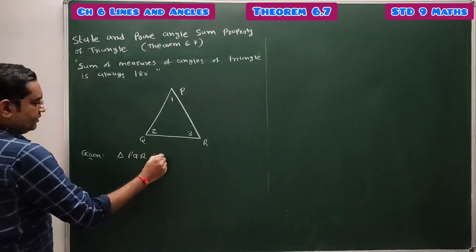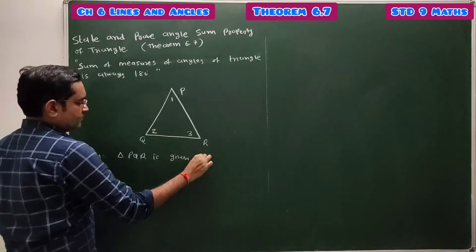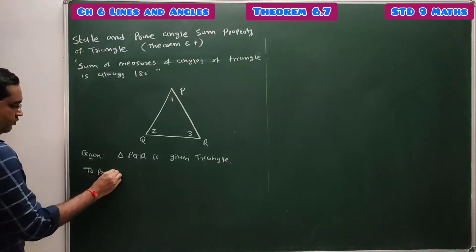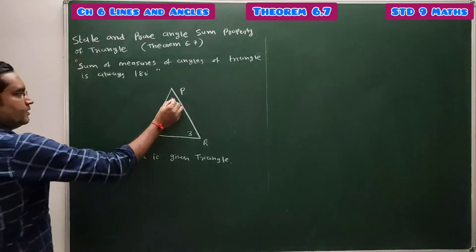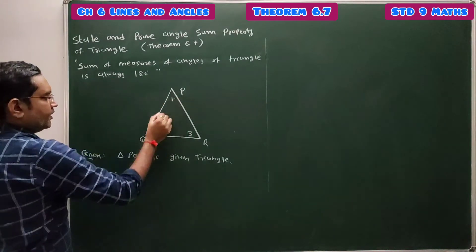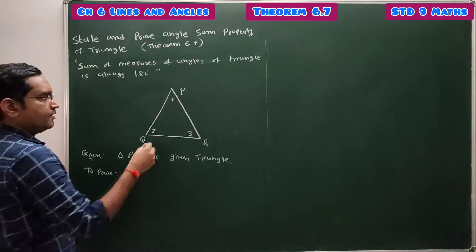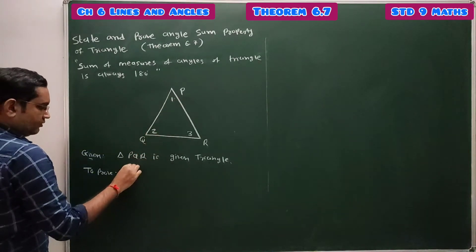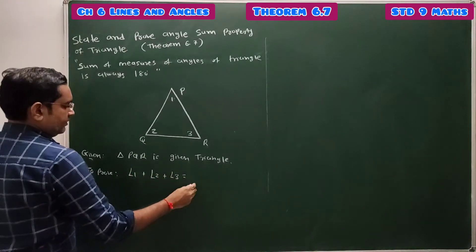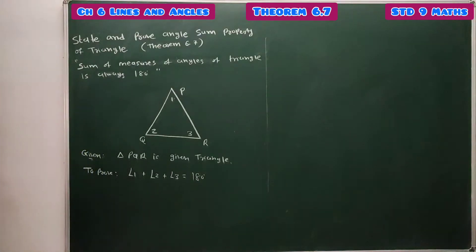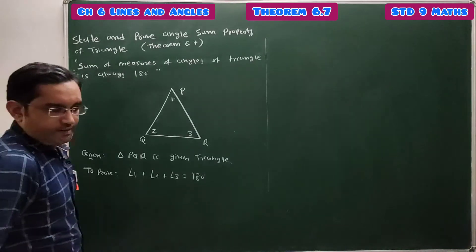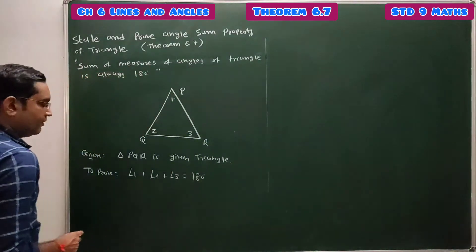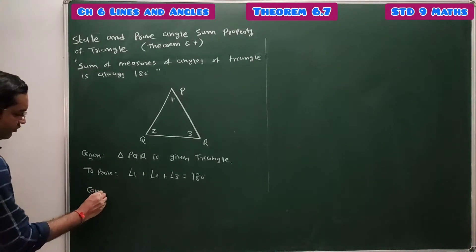Given: triangle PQR is given. To prove: angle 1 plus angle 2 plus angle 3 equals 180 degrees. This angle sum property of triangle can be proved by two methods. You have to learn both methods. The first method is by using construction.